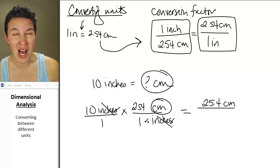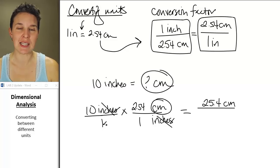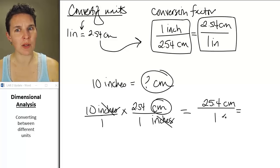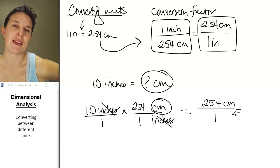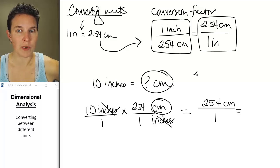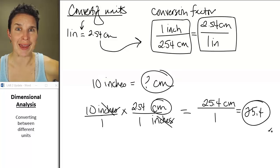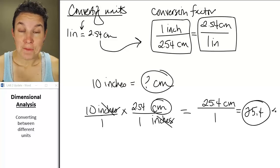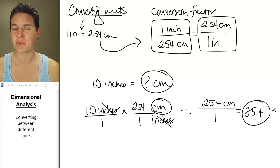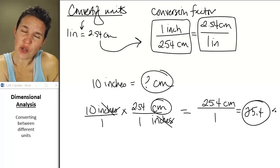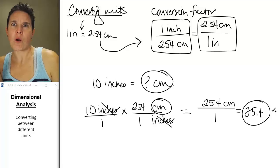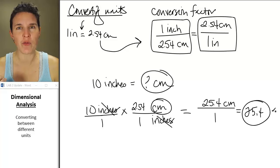Sometimes you have to multiply numbers on the bottom and do a division problem — no problem. In this case it's easy: 25.4 divided by one is 25.4 centimeters. The key is making sure you have conversion factors that work, understanding an equal part to an equal part. If one inch is 2.54 centimeters, it makes sense that 10 inches gives you more centimeters — 25.4 is a number that makes sense.